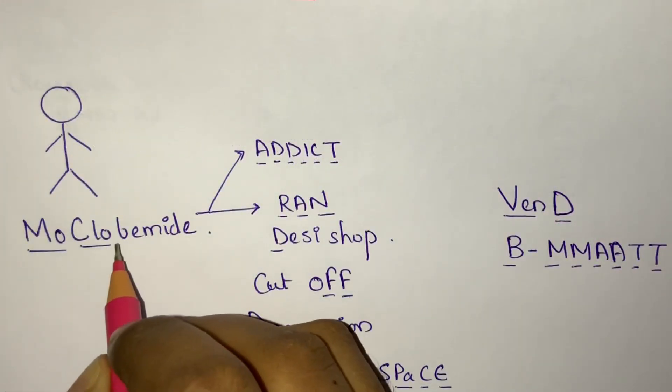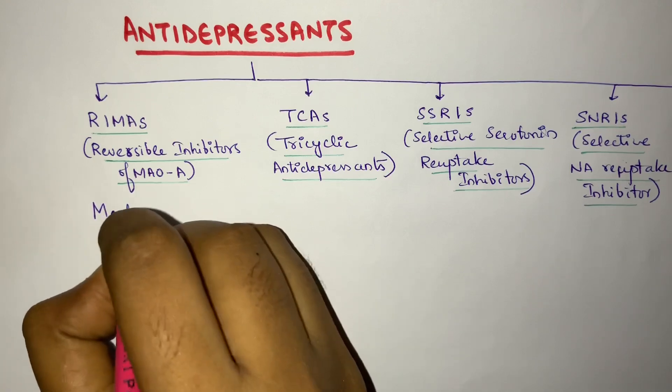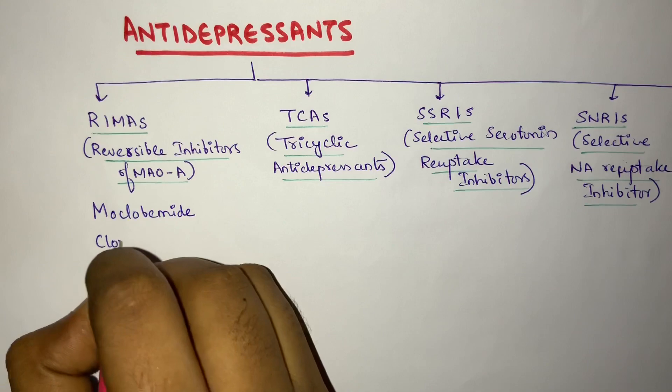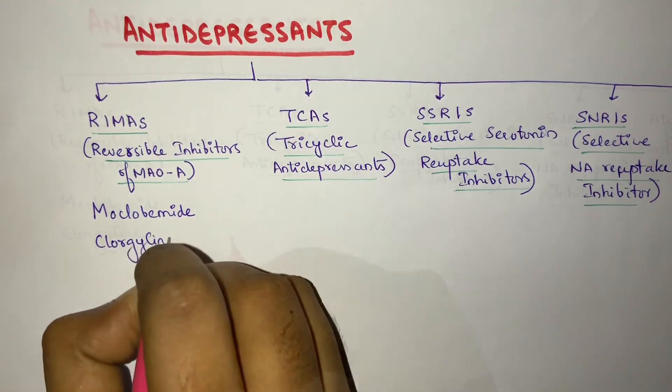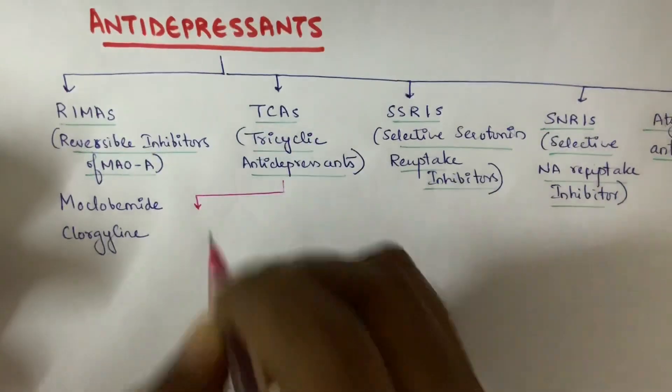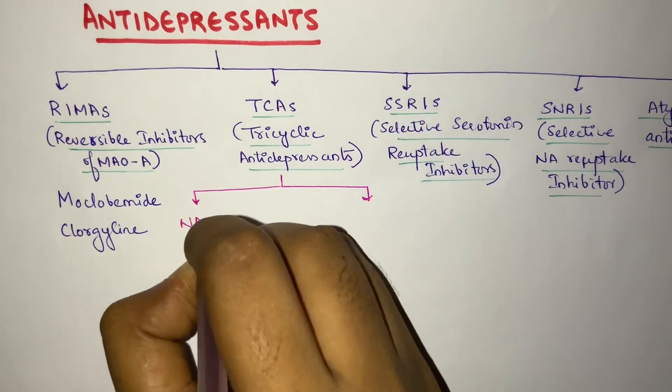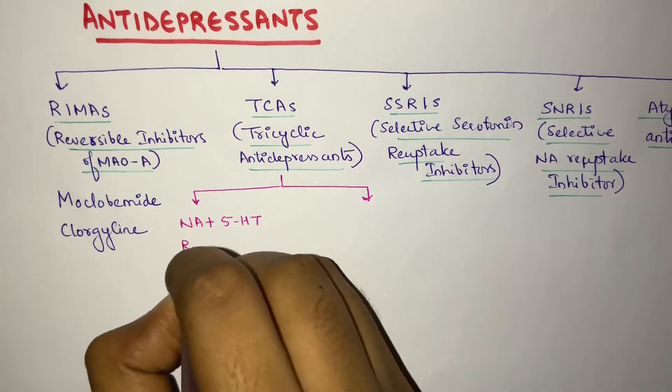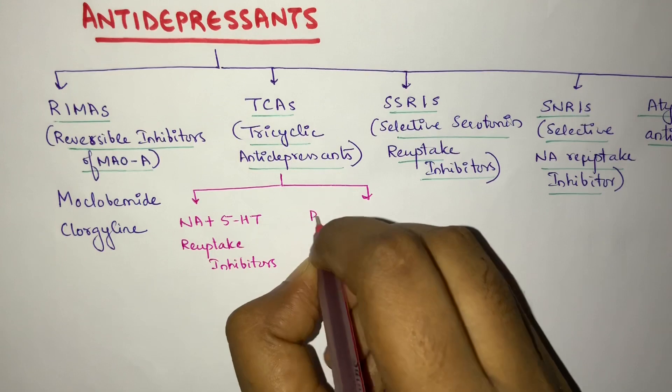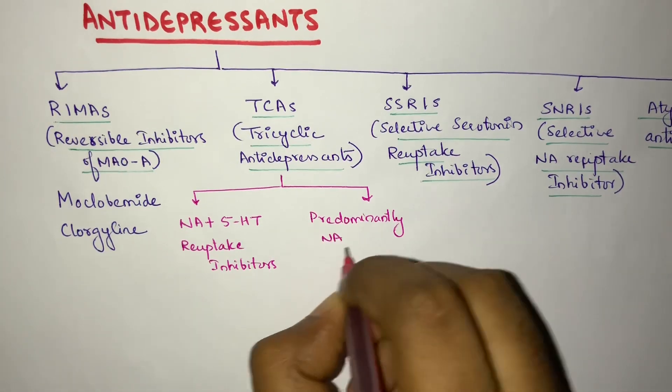So as you remember the story, first one is Mooglobimide. Mooglobimide is a reversible inhibitor of MAO-A, and then next one is Clorgyline. Then is TCAs. TCAs can be classified into two: the first one is noradrenaline plus serotonin reuptake inhibitors, and the next one is predominantly noradrenaline reuptake inhibitors.